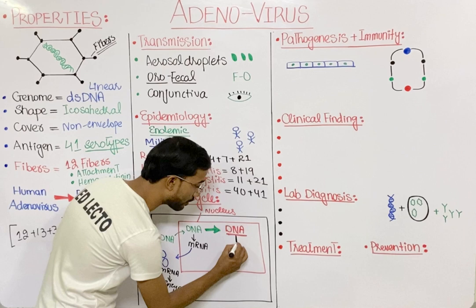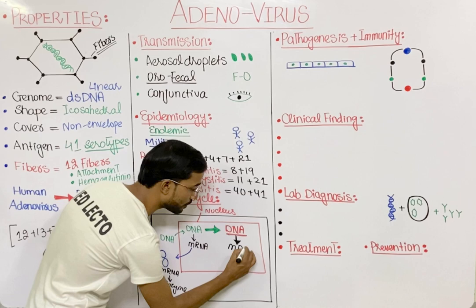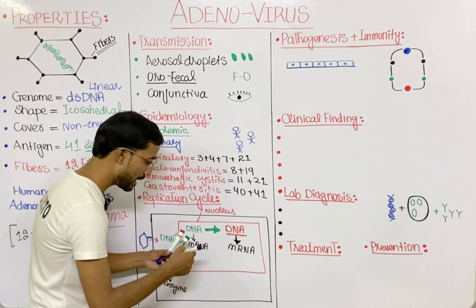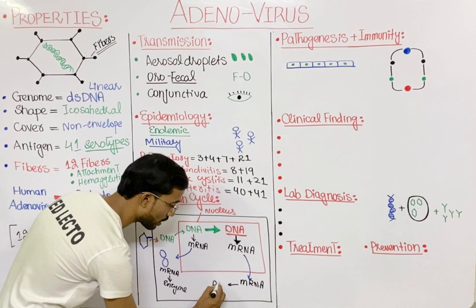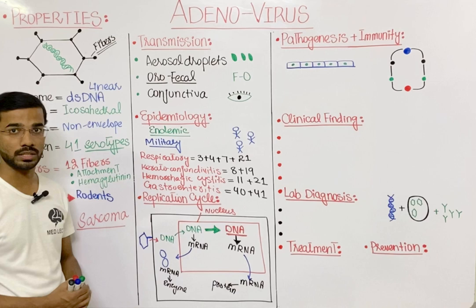After replication of the viral genome, the replicated DNA is used to produce late messenger RNA. This late mRNA re-enters the cytoplasm, where the synthesis of late proteins takes place.